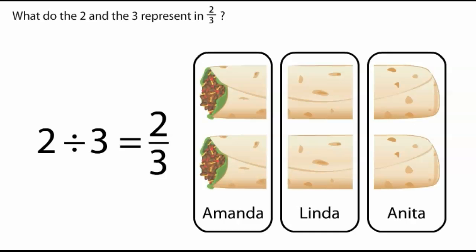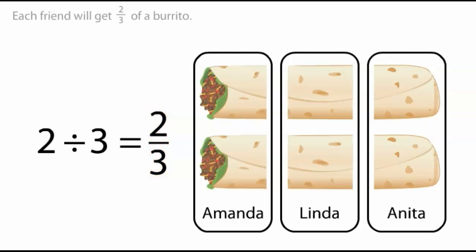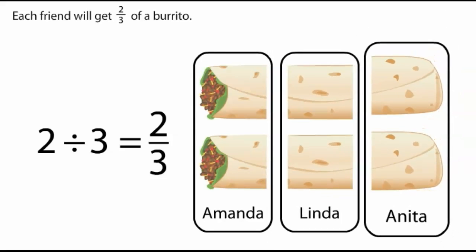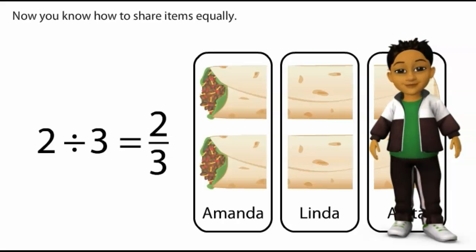What do the two and the three represent in two-thirds? The three represents the number of equal parts in one burrito. The two represents the number of parts each friend receives. Each friend will get two-thirds of a burrito. Now you know how to share items equally.